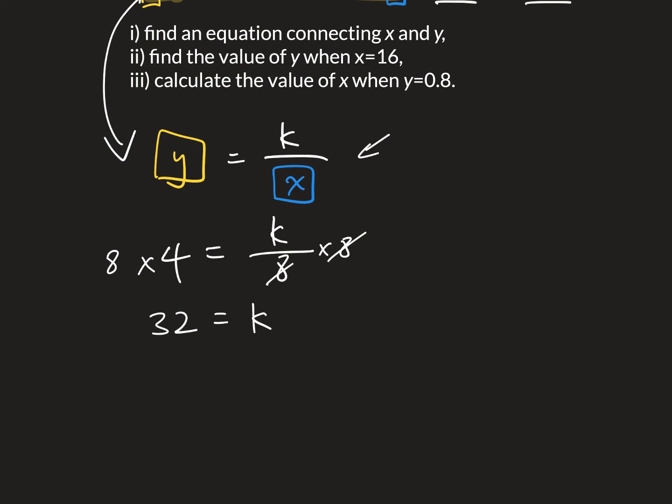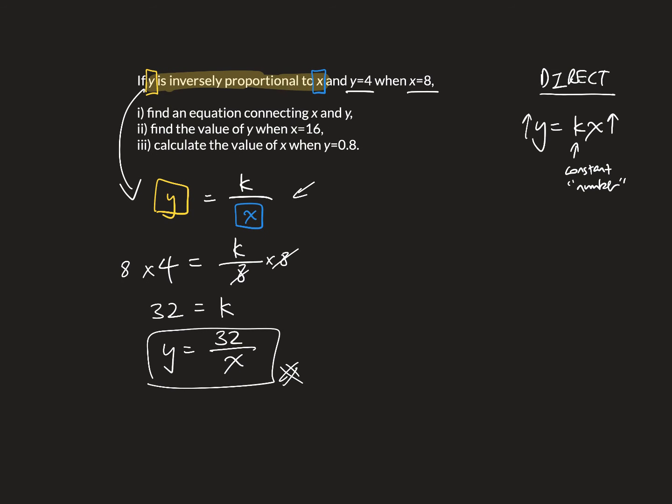So we multiply by 8 to get rid of the denominator. So this gives us 32 equals to k. And then we don't stop here. We go back to this equation. And so we say y must equal to k, which is 32, divided by x. This is my equation.